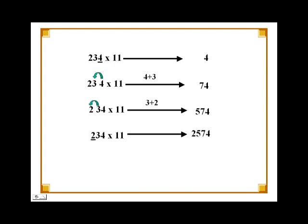The last step is to process the number 2. Since 2 is the leftmost digit in 234, all we need to do is write the number 2 next to 574 to get 2574, which is the final solution.